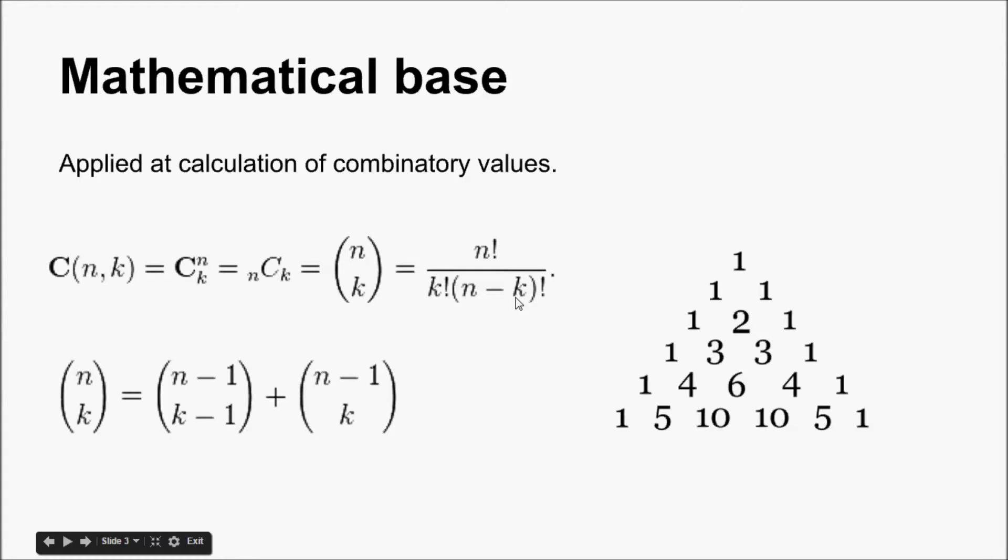A useful application of Pascal's triangle is in the calculation of combinations. For example, the number of combinations of n things taken k at a time, called n choose k.